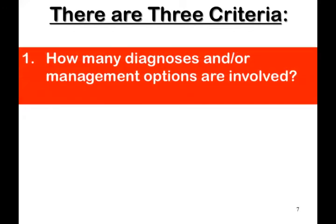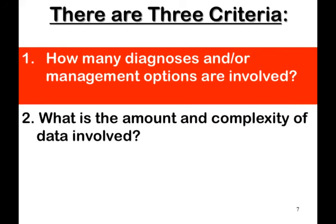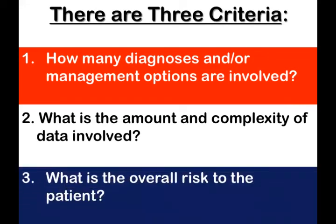Let's go on to the 99205 that Dr. Voldemort was billing all the time. To bill a 99205, if you're not coding based on time, a 99205 requires a comprehensive history, a comprehensive exam, and high medical decision making. For an established patient 99215, you're required to hit two out of three key components. For a new patient or a consult, you need to hit all three key components. A lot of focus from a carrier and insurer perspective is on the medical decision making.